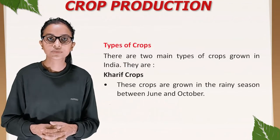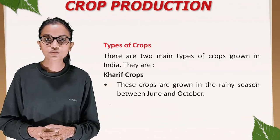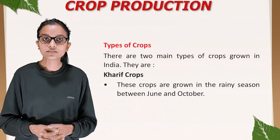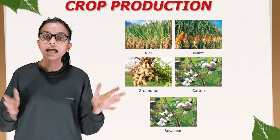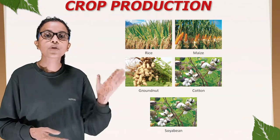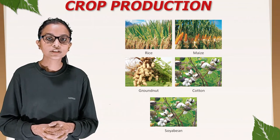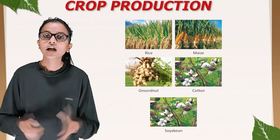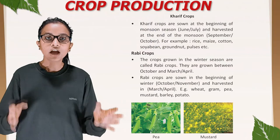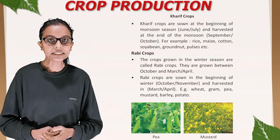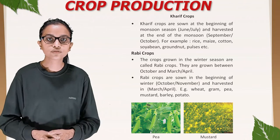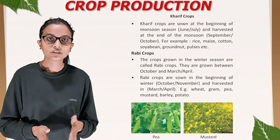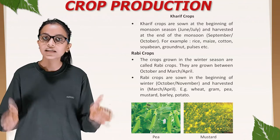There are two main types of crops grown in India. The first is kharif crops, which are grown in the rainy season between June and October. Examples of kharif crops are rice, maize, groundnut, cotton, and soya bean. Kharif crops are sown at the beginning of the monsoon season in June–July and harvested at the end of the monsoon in September–October. Other examples include pulses.